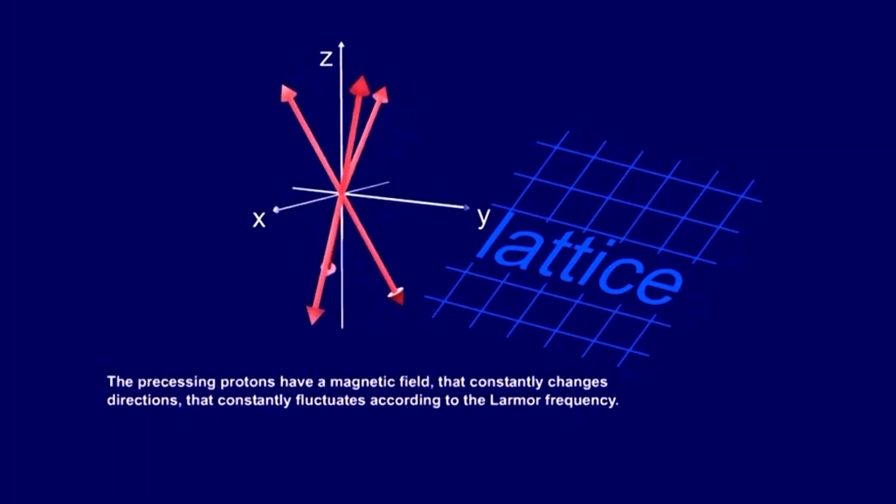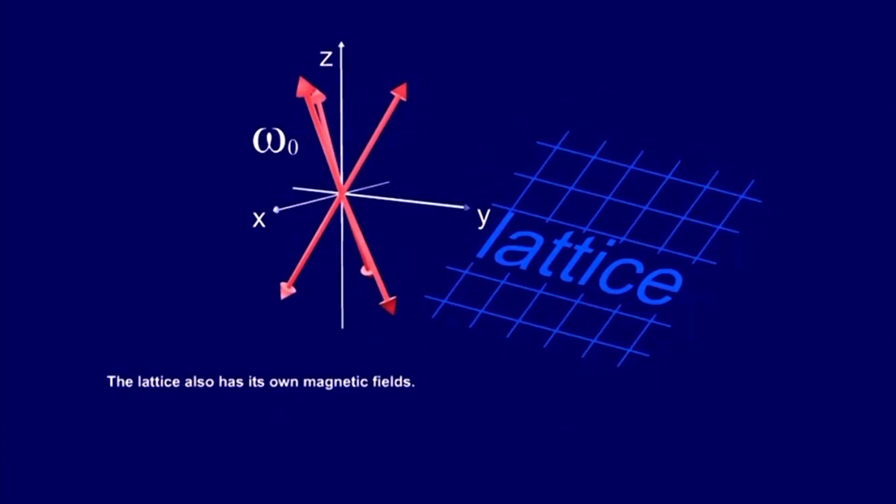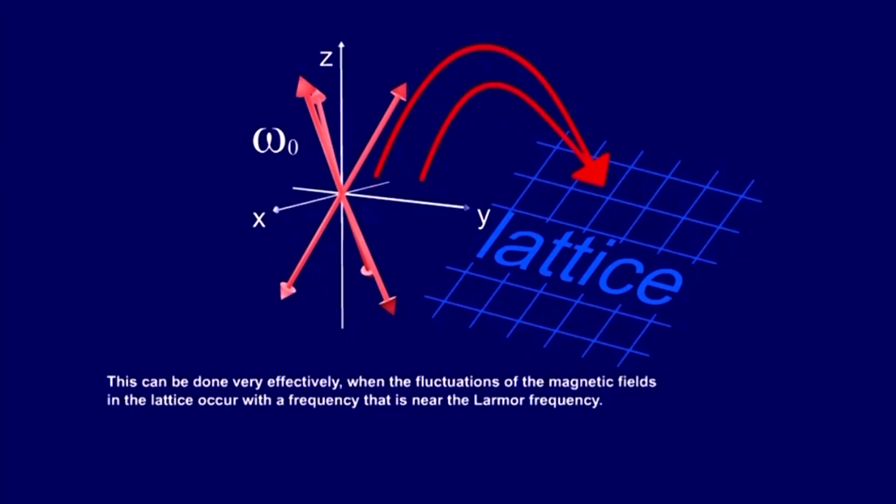The precessing protons have a magnetic field that constantly changes directions, that constantly fluctuates, according to the Larmor frequency. The lattice also has its own magnetic fields. The protons now want to hand energy over to the lattice to relax. This can be done very effectively when the fluctuations of the magnetic fields in the lattice occur with a frequency that is near the Larmor frequency.